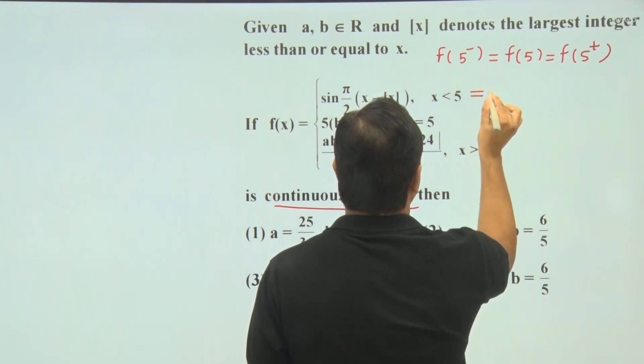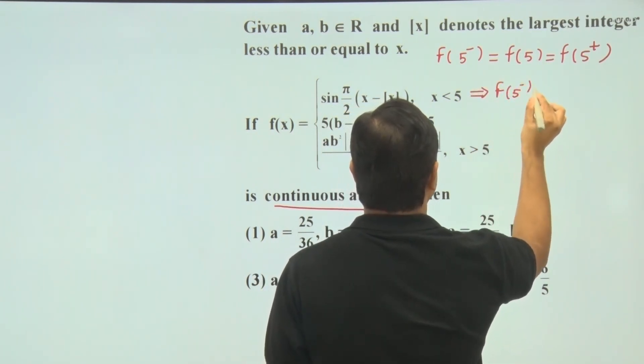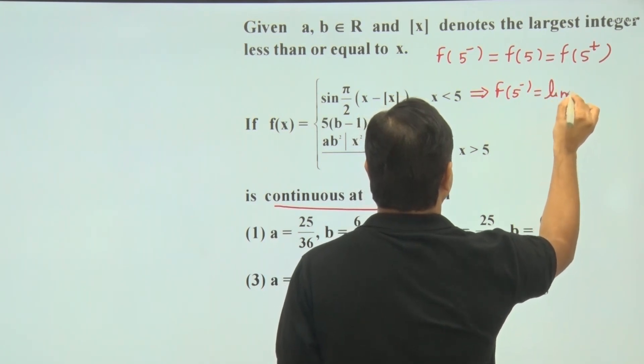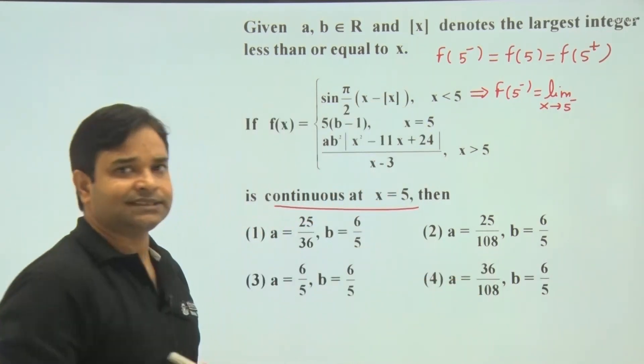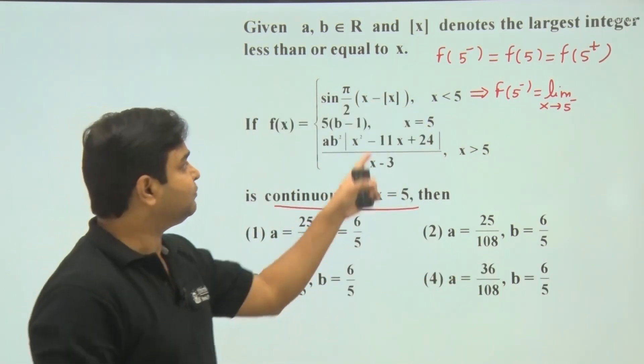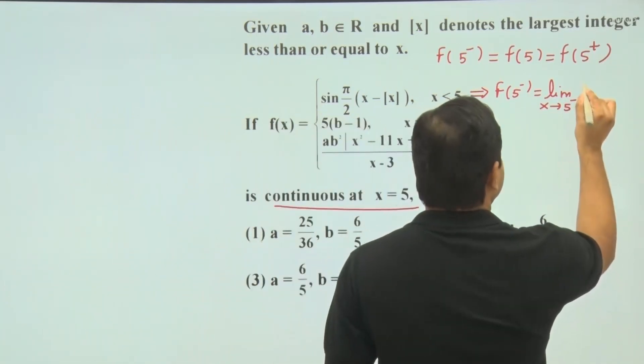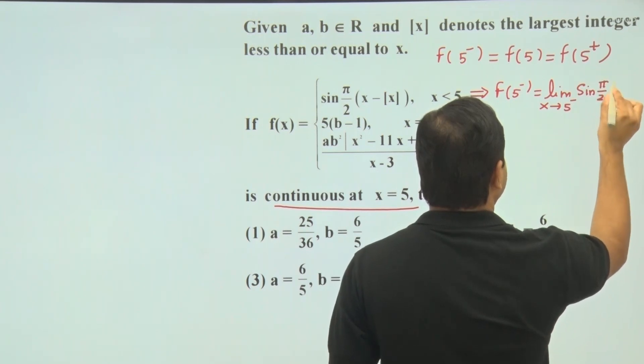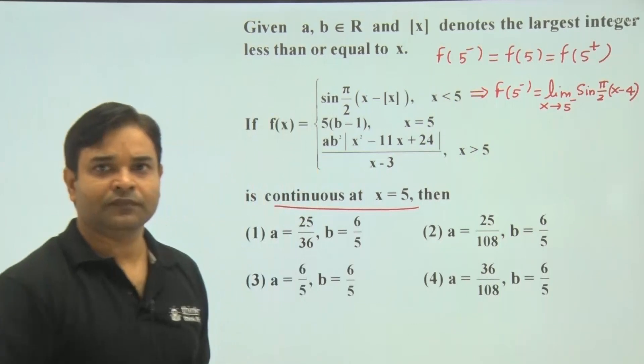From here, f of 5 minus, this will be limit x tending towards 5 minus. As we know, when x is just less than 5, this bracket x will be 4, exactly 4. So this is sin π/2 times x minus 4.